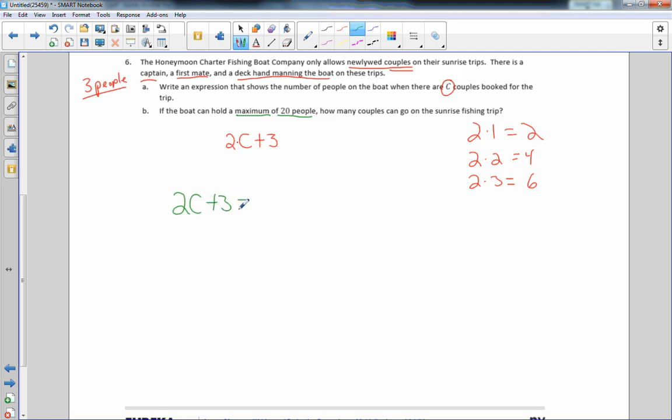What I want to do is I want to take that expression of number of couples, two people per couple, plus the three deckhands, and that total cannot exceed 20. So it can equal 20, but it has to be less than or equal to 20. I could make that an inequality as well, but it says if the boat can hold a maximum of 20 people, the maximum is when it's equal, so I won't use an inequality here. The maximum is when it's equal.